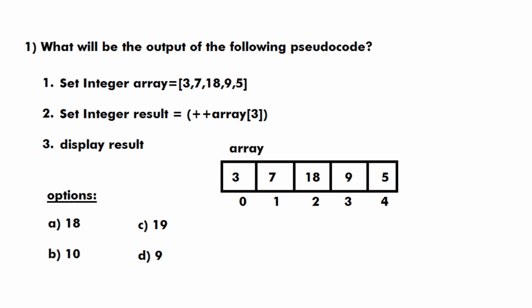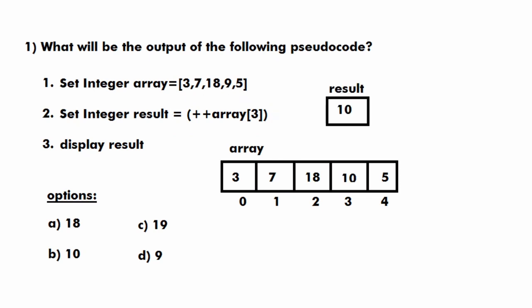In the second line we have a variable result, and the value of result is pre-increment of array[3]. First we identify the value at index 3, which is 9. Since we have two plus-plus signs indicating pre-increment, we increment array[3] by 1, giving us 10. So result holds the value 10. The output displayed in the third line is 10, which is option B.